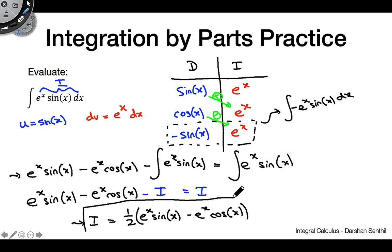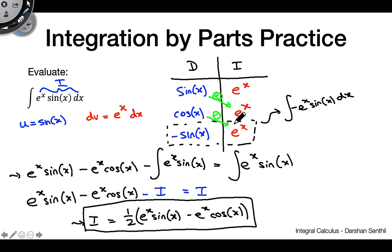It's really lovely how this works out so cleanly — it looks like a monster problem with several IBP steps, but it comes together nicely. Quick recap: do the table as normal, but as soon as you see the original integrand's terms (sine x and e^x) in the same row, stop, write the first terms, and tag on the integral at the end. Then solve algebraically for I.